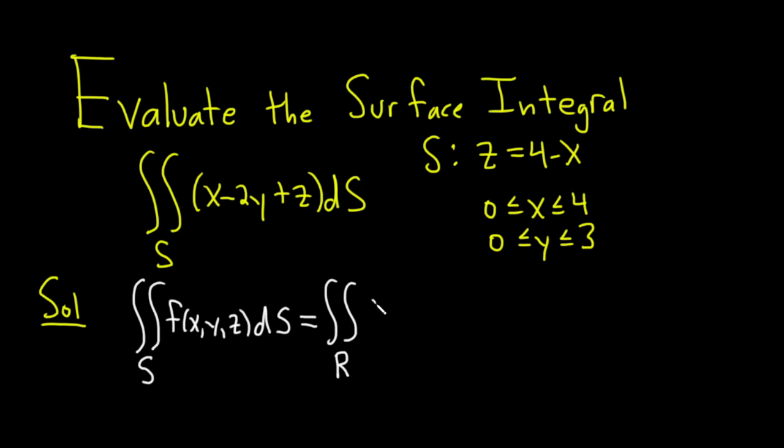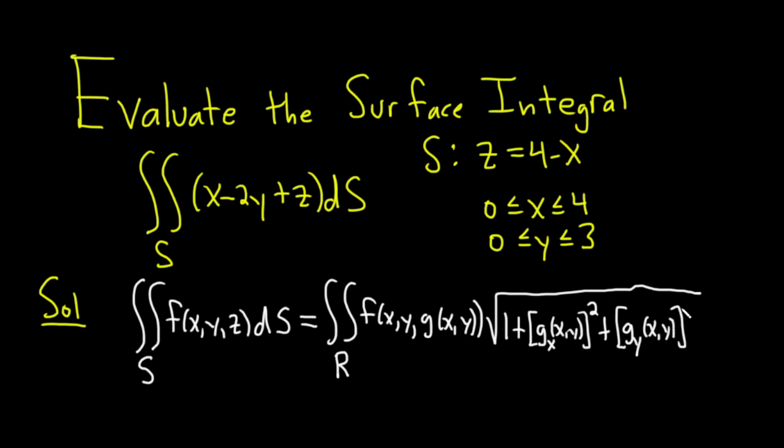So this integral over R is f of (x,y, g(x,y)). And then here we have a square root. It's 1 plus the partial of g with respect to x squared, plus the partial of g with respect to y squared, dA.